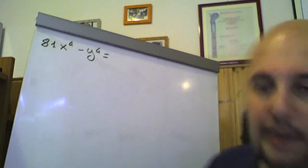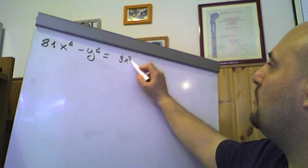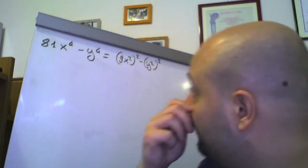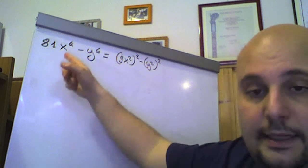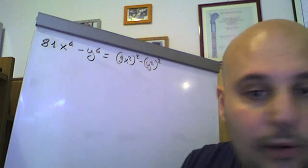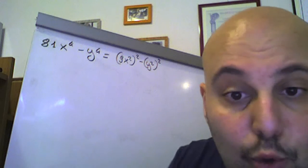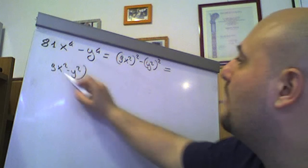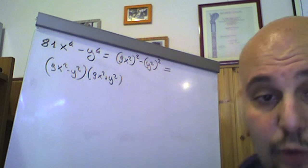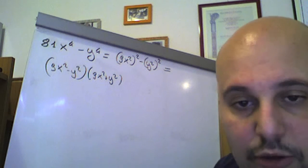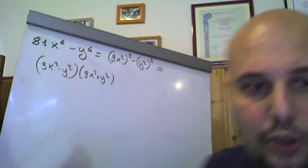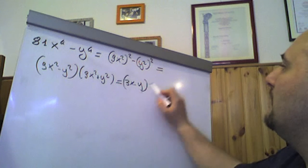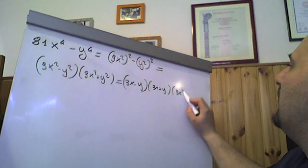81x⁴ meno y⁴. Bene, anche questo lo possiamo scrivere come (9x²)² meno (y²)². Questa è una differenza di potenze, perché 81 è un 3 alla quarta: 3⁴ · x⁴ meno y⁴. Differenza, potenze uguali, pari. Quando c'è la differenza tra potenze pari, la possiamo sempre ricondurre a una differenza di quadrati. Infatti, questo si può scrivere come (9x² meno y²) che moltiplica (9x² più y²). Dove 9x² più y² non si può scomporre — ricordo che a salvo eccezioni la somma di potenze uguali pari non si può scomporre. Quello che si può fare invece è scomporre 9x² meno y², che è un'altra differenza di quadrati, scrivibile come (3x meno y)(3x più y), tutto che moltiplica (9x² più y²).